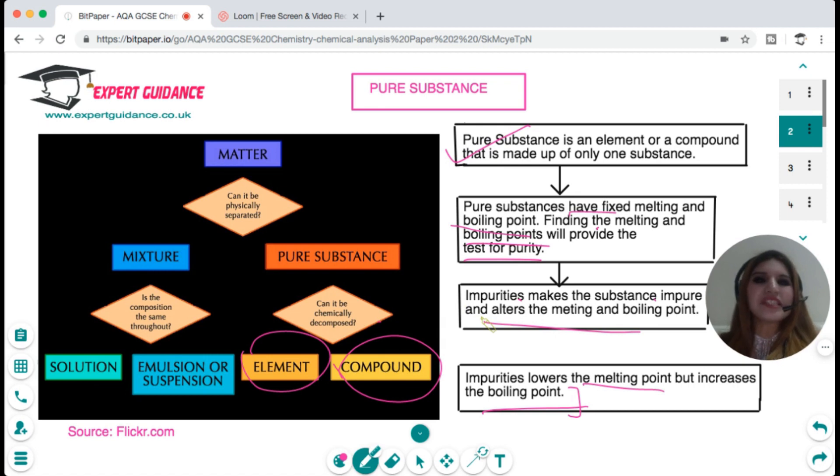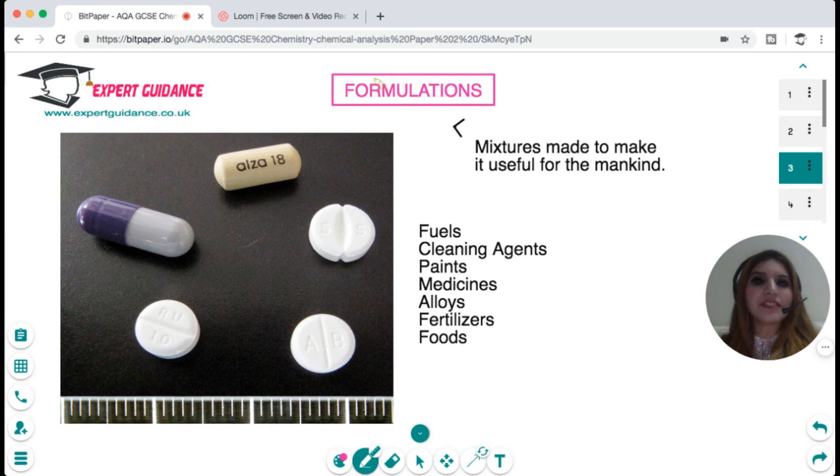But pure substances are not always useful because you do not find all the properties that you require. So you need to mix a pure substance with other substances and make a formulation. What is a formulation? A formulation is a mixture made to make it useful for mankind.